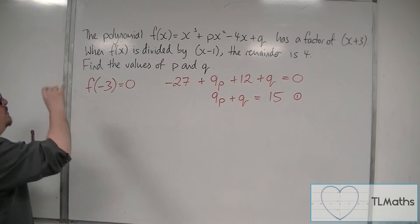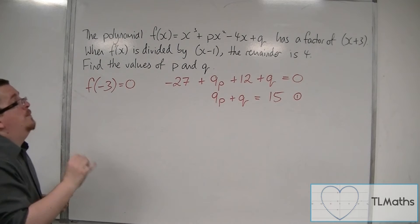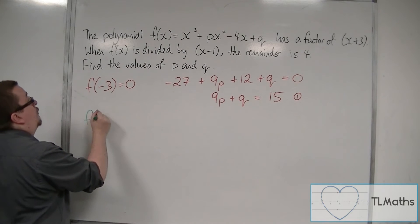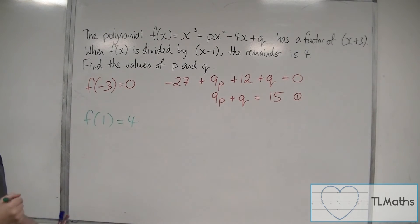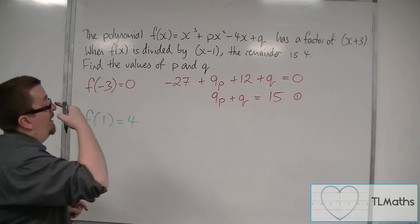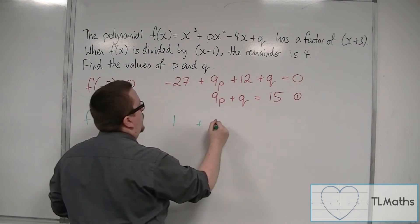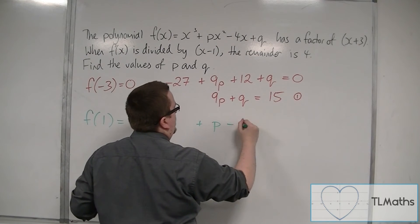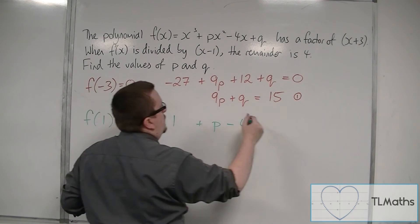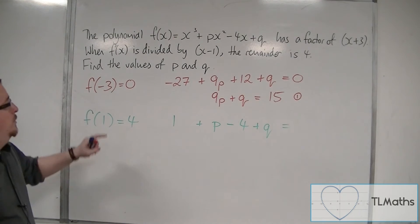Now I'm going to read the second line. When f(x) is divided by x minus 1, the remainder is 4. So we're told that f of 1 is going to be equal to 4. So substituting in 1, I get 1 cubed which is 1, plus p times 1 squared so just p, take away 4 times 1 so minus 4, plus q, and that's going to be equal to 4.